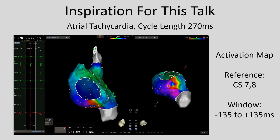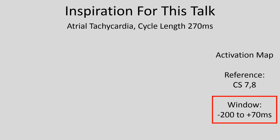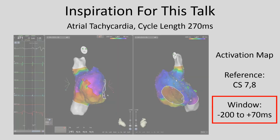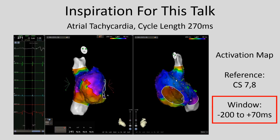So we were confused. We said maybe our window of interest was misplaced. So we moved the window of interest a little earlier and used the very same points to create a new activation map, which was even more confusing. There were multiple early areas — some orange to red up in the superior vena cava and some red over here on the lateral right atrium adjacent to late. But again, when we did entrainment in these areas, we showed that this was not anywhere near the origin or the circuit of this tachycardia.